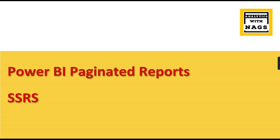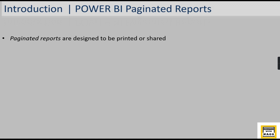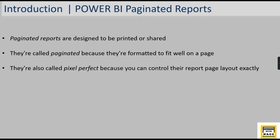Let us begin and understand what Power BI Paginated Reports are. Paginated reports are designed to be printed or shared. If your Power BI reports are meant for printing and sharing, you need to go for Power BI Paginated Reports. With regular Power BI reports, when you do a print, the content may not render properly — something will span to another page, or only half the report will be printed. With paginated reports, you have more control. They are called paginated because they are formatted to fit well on a page, and also called pixel perfect because you can control the pixel settings.